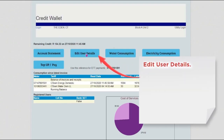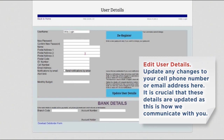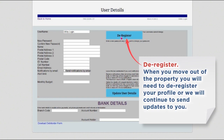Edit user details: update any changes to your cell phone number or email address here. It is crucial that these details are updated as this is how we communicate with you. Deregister: when you move out of the property, you will need to deregister your profile or we will continue to send updates to you.